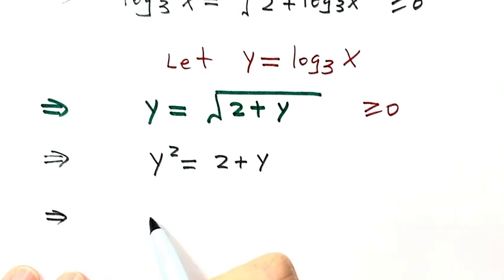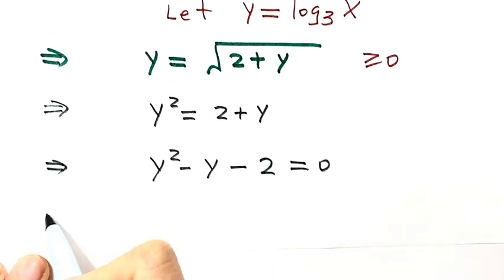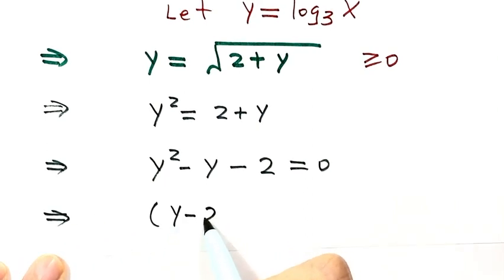Move all terms to the left hand side, then y squared minus y minus 2 equals 0. Let's factor the left hand side. Then y minus 2 times y plus 1 equals 0.